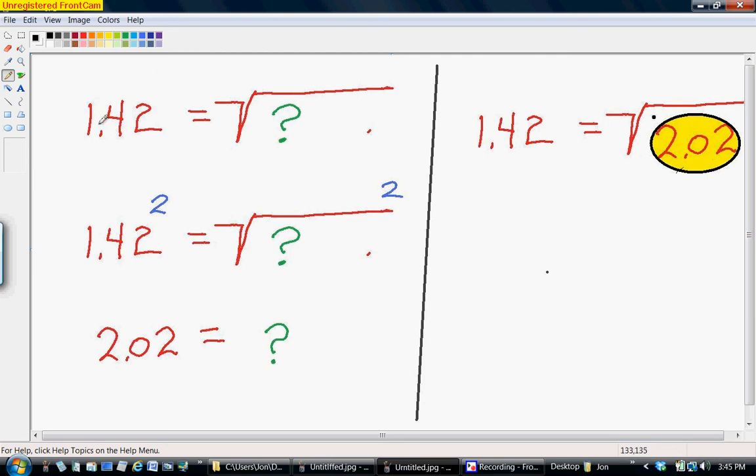We'll just take 1.42 is equal to the square root of what? To get the answer of what? We square both sides to get rid of the radical sign, and then we just find out that 1.42 squared is 2.02.